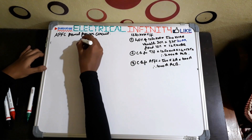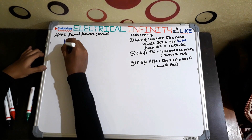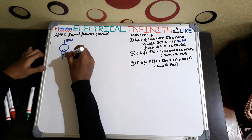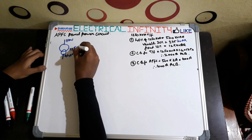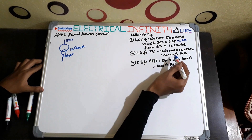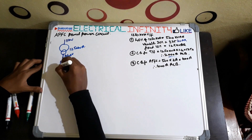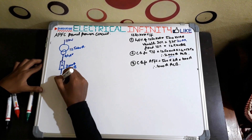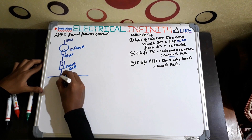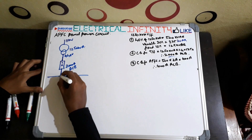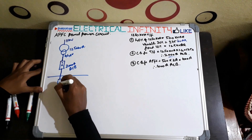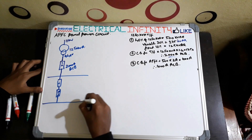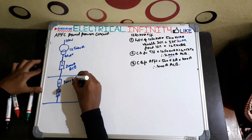Now let's draw the circuit. We are using a transformer of 11 kV stepping down through a 1250 kVA transformer. For the 1250 kVA transformer we are using a 2000 ampere ACB. We are also taking a 1000 ampere ACB and a 2000 ampere ACB for the APFC panel section.